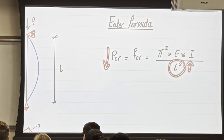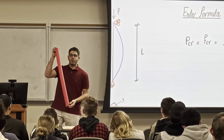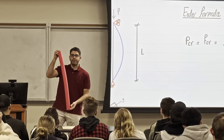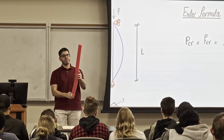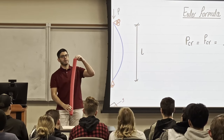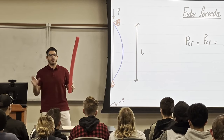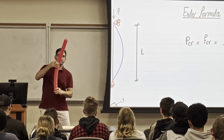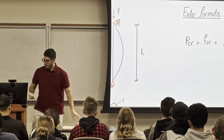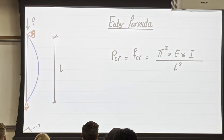Sometimes if a column's length is doubled or tripled, it might buckle under its own weight alone — no applied load needed. So the buckling load, or PCR, is inversely proportional to the square of the length. Notice the moment of inertia appears in the equation because buckling is essentially a bending problem, and moment of inertia resists bending.